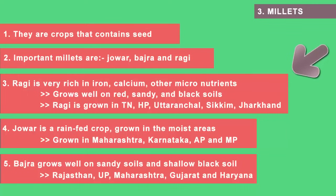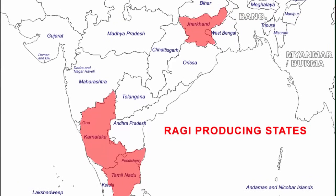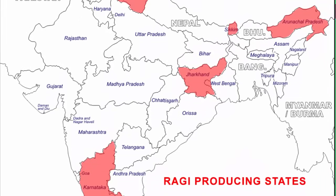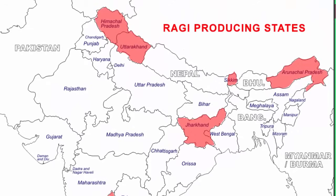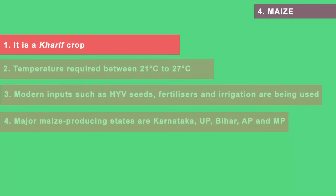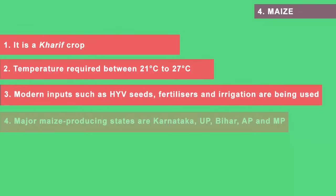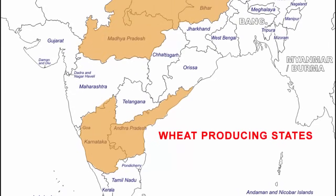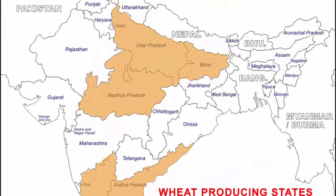Ragi needs red, black or sandy soil to grow. Karnataka and Tamil Nadu are the largest producers of ragi, and states like Himachal Pradesh, Uttaranchal, Sikkim, Jharkhand and Arunachal Pradesh also grow a lot of ragi. The next crop is maize — a Kharif crop requiring a lot of water and a temperature of 21 to 27 degrees Celsius. Today maize is grown using high-yielding variety seeds that require less input but give more output, along with fertilizers and irrigation facilities.